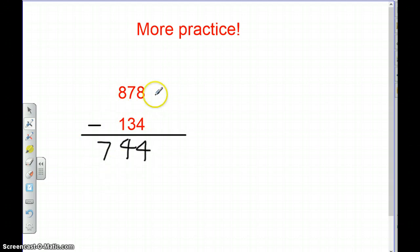If I subtracted correctly, then I should be able to add this number and this number to get this number. So you're basically just working backwards. So I'm going to do 744 plus 134.